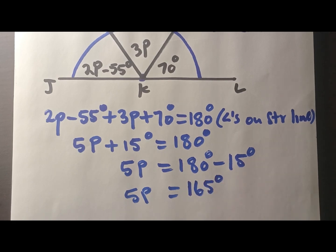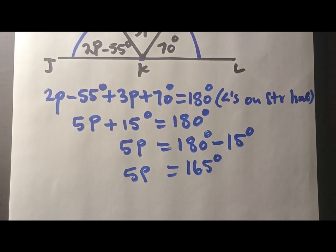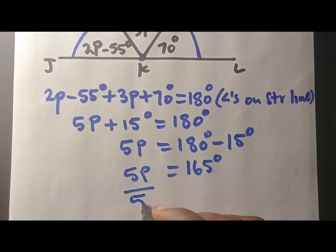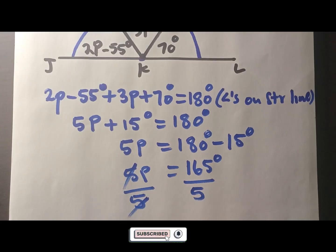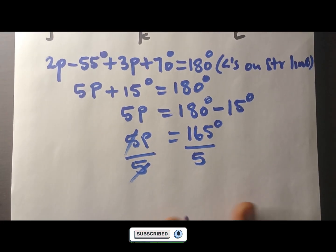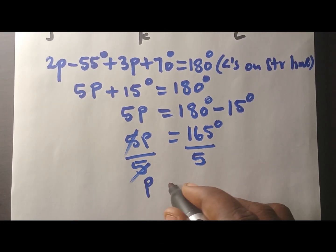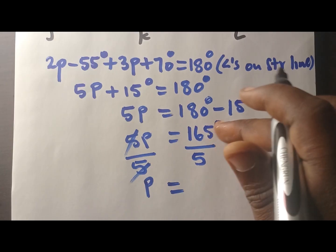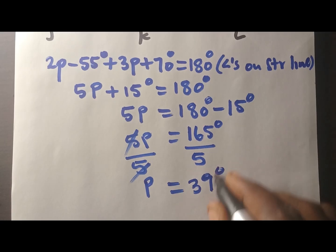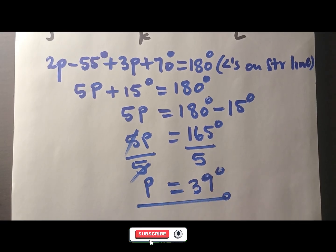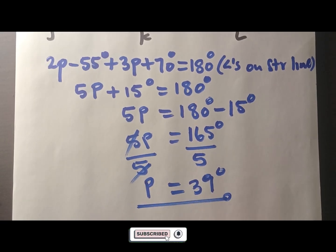Taking 15 to the other side: 5p equals 180 minus 15 degrees, which gives 165 degrees. Now we need p, so divide both sides by 5. When you do that, you are left with p = 33 degrees. Bye for now — see you in the next video. Any questions, they'll come up there.